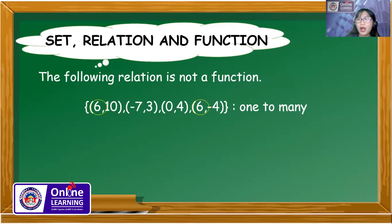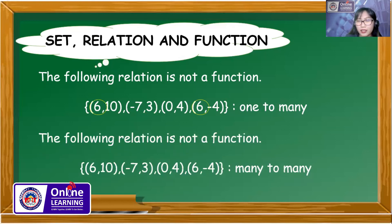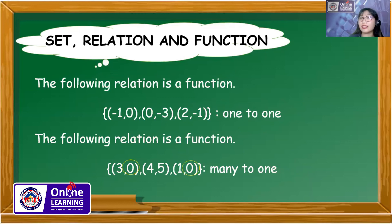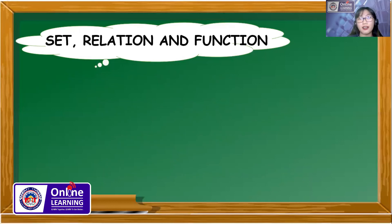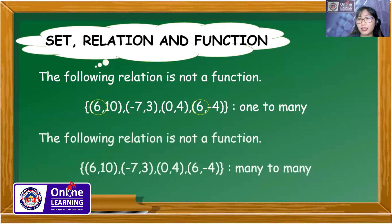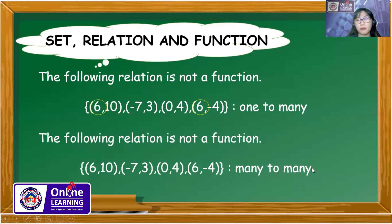Let's review. How can we say that a relation is a function? There are two cases. First, one-to-one relationship: the domain and the range cannot be repeated in other ordered pairs. Second, many-to-one relationship: the range is repeated in other ordered pairs. A relation is not a function if the domain is repeated in other ordered pairs — that is a one-to-many relationship. Also, if it is a many-to-many relationship, where both the domain and the range are repeated in other ordered pairs, then that is also not a function.